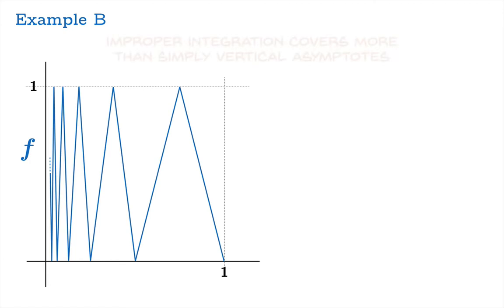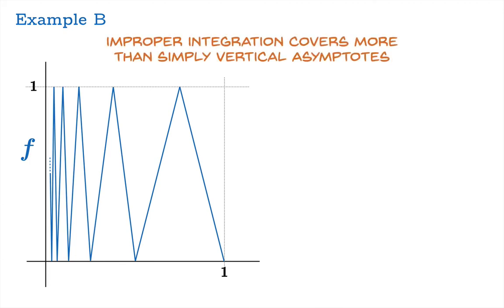Now example B is meant to indicate that improper integration covers more than simply vertical asymptotes. So this is a piecewise linear function and it oscillates between the values 0 and 1 on the interval from 0 to 1. And we'll see it bounce back and forth and we're going to move right to left here and we'll notice that the zeros occur at 1,